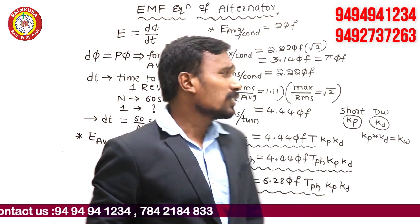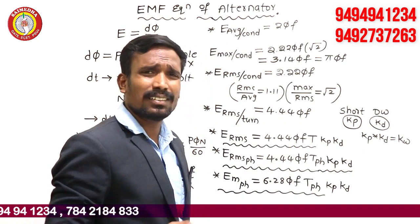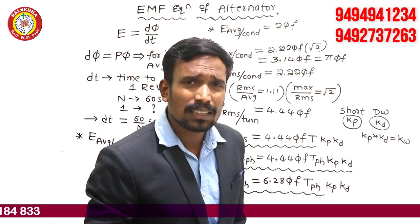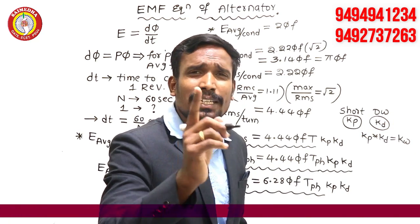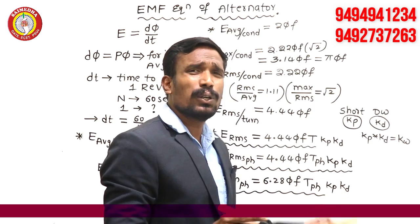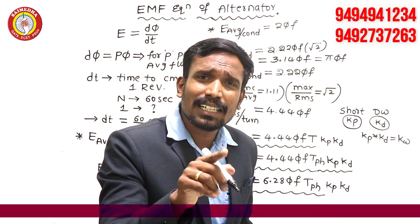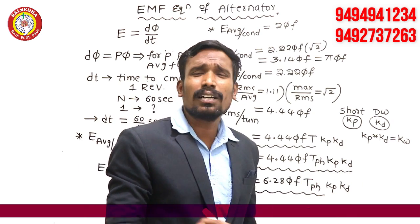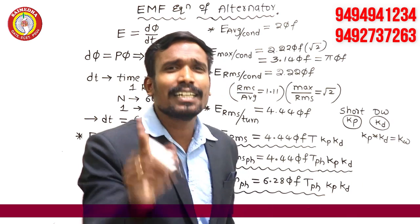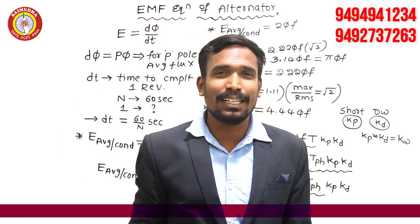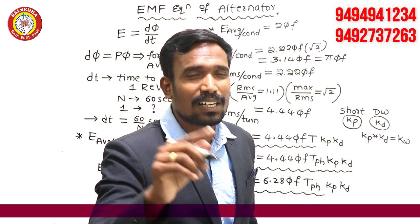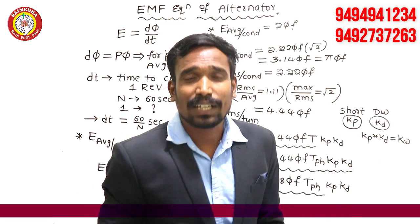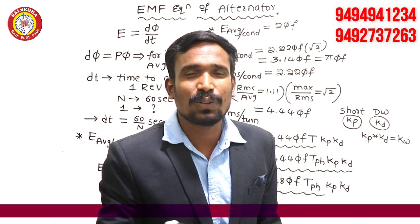This is generally the synchronous generator alternator EMF equation. If full pitch winding is used, then KP equals 1. If concentrated winding is used, then KD equals 1. So if you use concentrated and full pitch winding, there is no KP or KD correction because their value is 1. That is the EMF equation of a transformer — in a transformer we use full pitch concentrated winding, so KP = 1 and KD = 1.